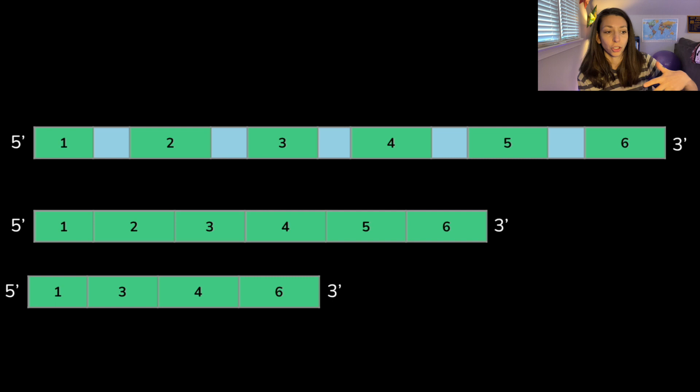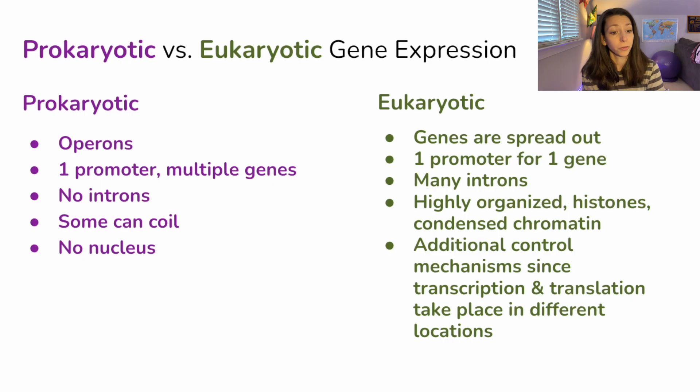But remember, we can express these alternatively, even though they're going to stay in the same order. So we're never going to flip sections one and two, for example, here, but we could go one, three, four, five, or we could go one, two, four, six, depending on what's necessary for the protein.